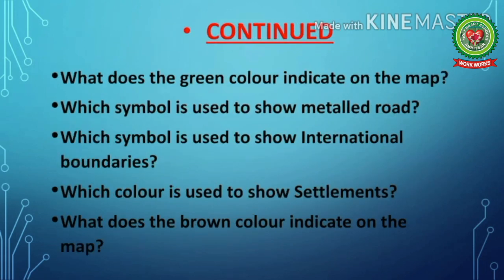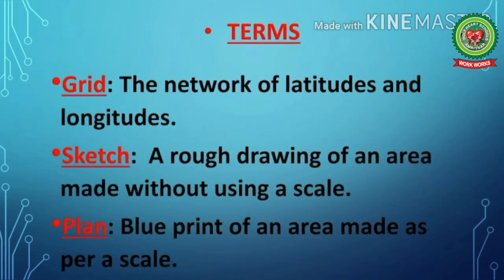Number 6: What does the green color indicate on the map? Number 7: Which symbol is used to show metal road? Number 8: Which symbol is used to show international boundaries? Number 9: Which color is used to show settlements? And number 10: What does the brown color indicate on the map?